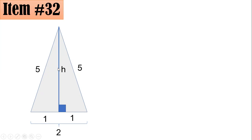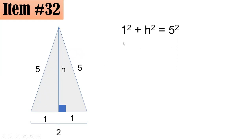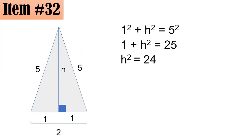That right triangle allows us to apply the Pythagorean theorem. We have 1 squared plus h squared equals 5 squared, so 1 plus h squared equals 25. Subtracting 1 from both sides gives h squared equals 24.